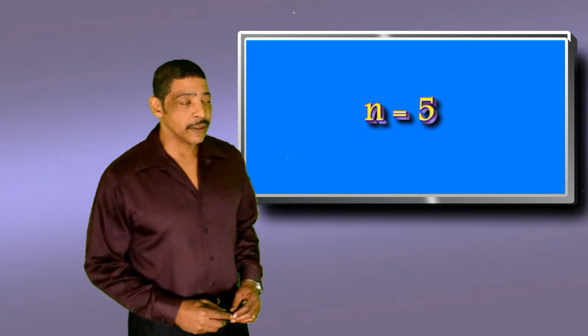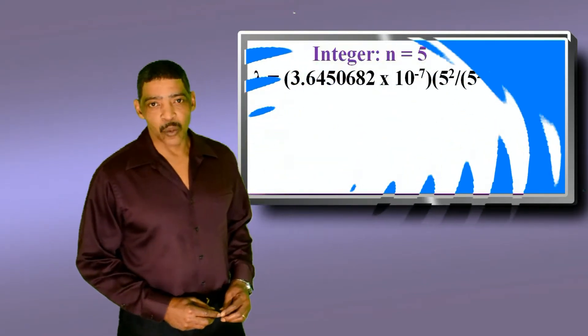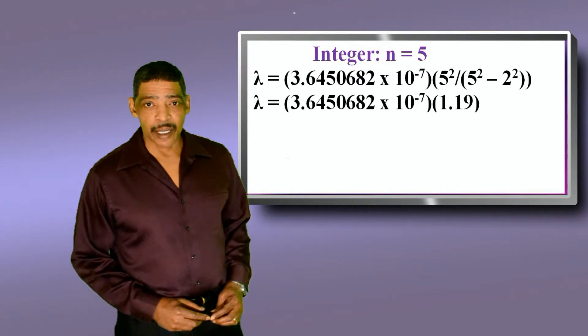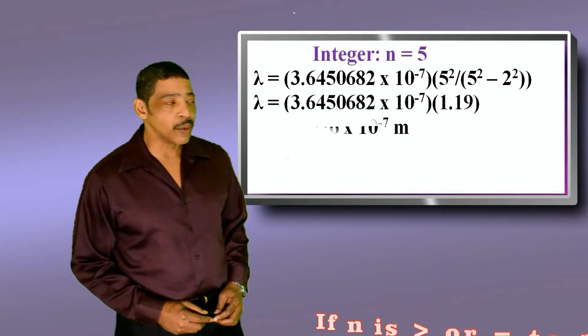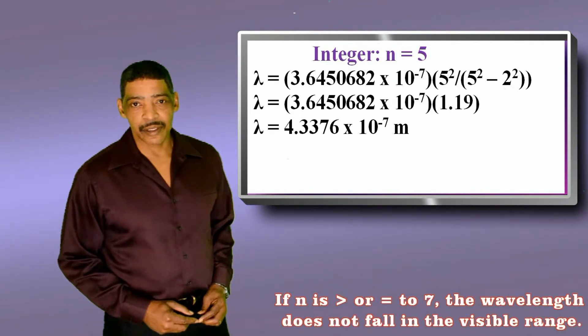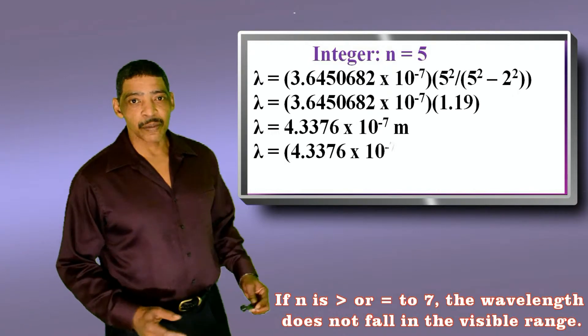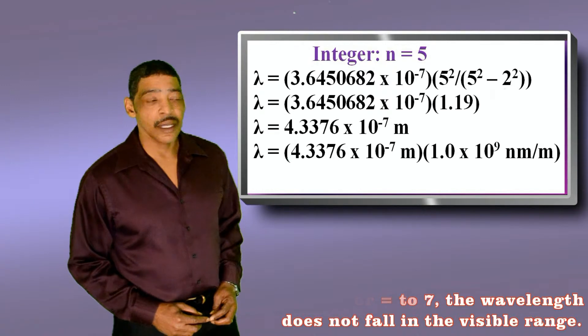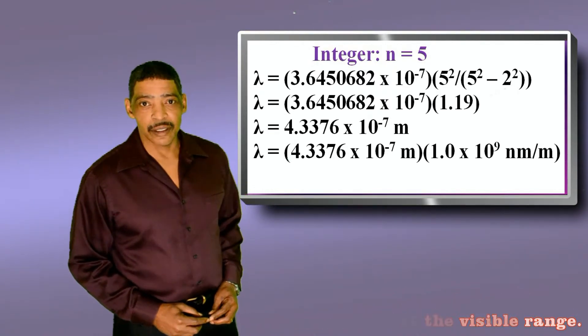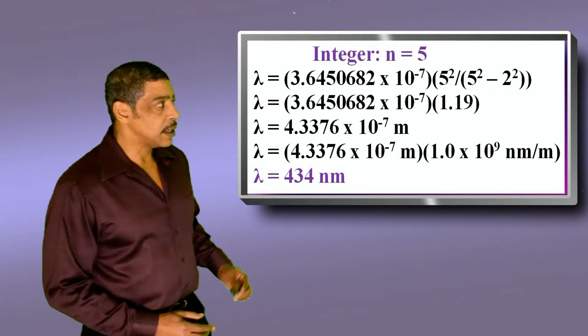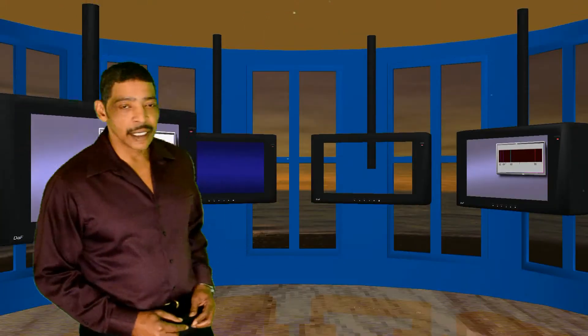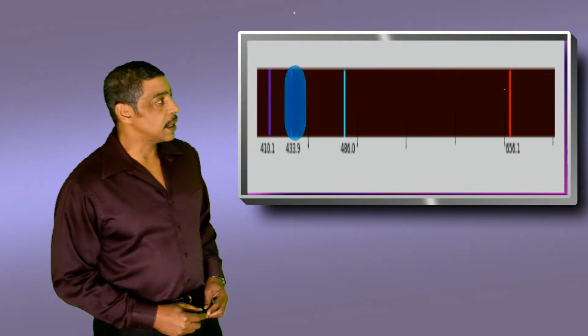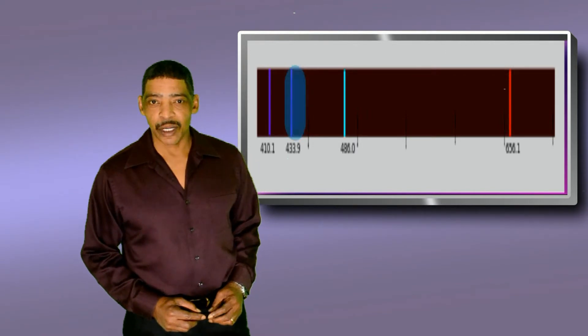If n is equal to 5, then the factor generated will be 1.19. So, lambda will equal Balmer's constant times 1.19, which is equal to 4.3376 times 10 to the minus 7 meters. And of course, multiplying 4.3376 times 10 to the minus 7 meters by 1.0 times 10 to the 9 nanometer per meter will equal 434 nanometers. And 434 nanometers represents the blue line found in hydrogen's bright line spectrum.